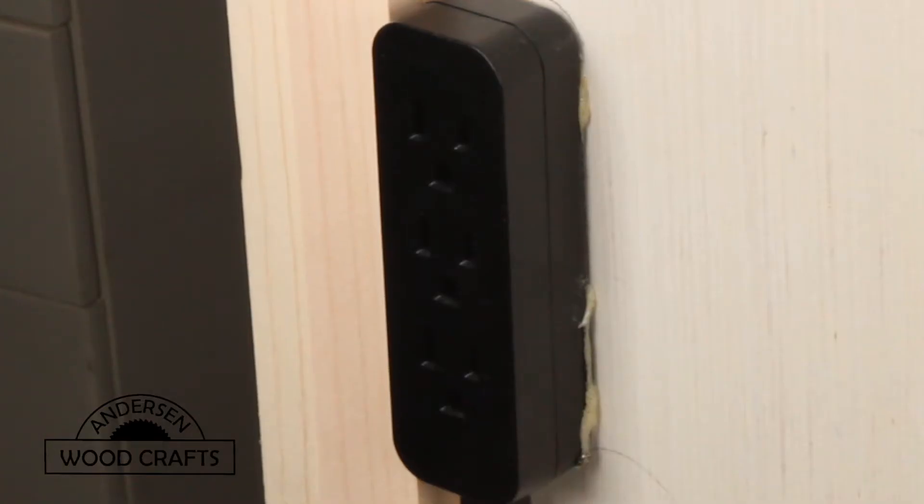Now when you're using this booth, there are a few items that need power. Instead of plugging these things in individually, I just glued a small power strip using Gorilla glue or polyurethane glue to the side of the booth.